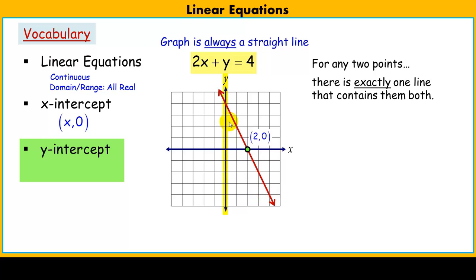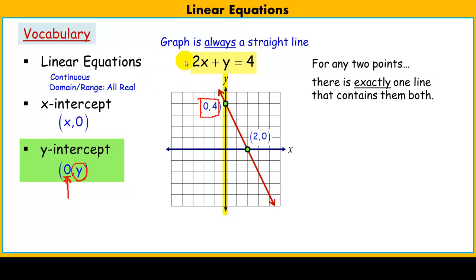The y-intercept is where the line crosses the y-axis. Every single point on the y-axis has an x-value of 0. When we talk about the y-intercept of a line, we're usually referring to that y-coordinate — which is 4 on the y-axis in this case. But remember, this is a point that is on the line, and that x and y satisfies this linear equation.